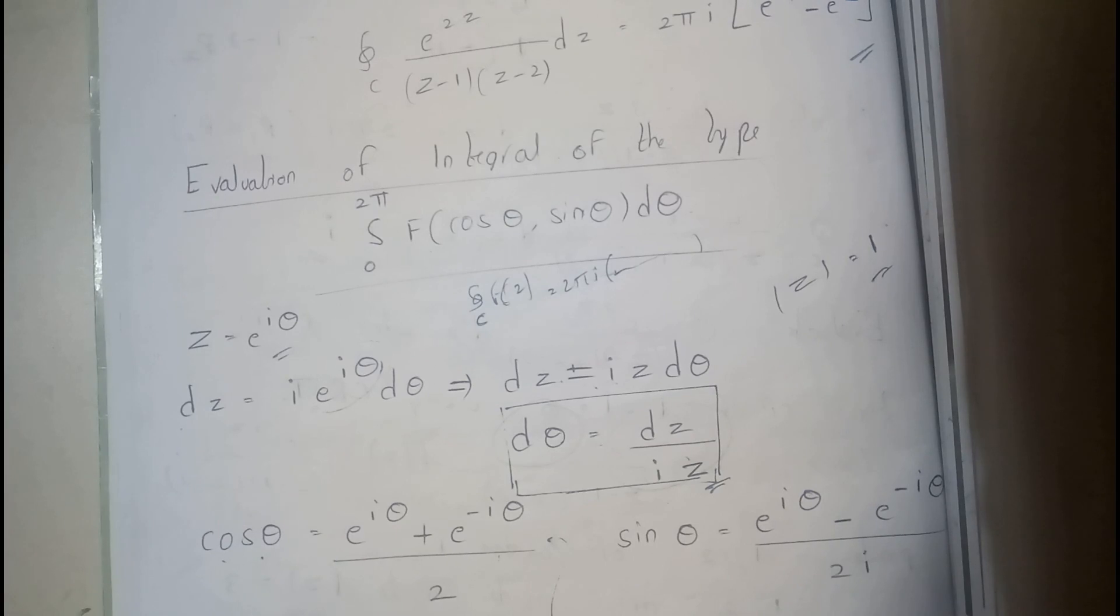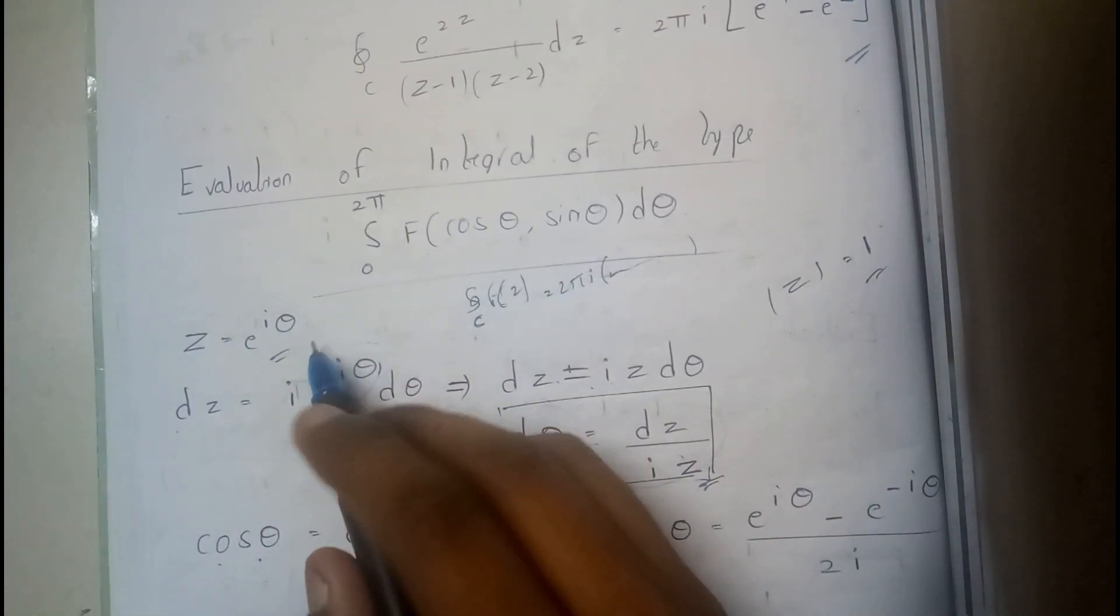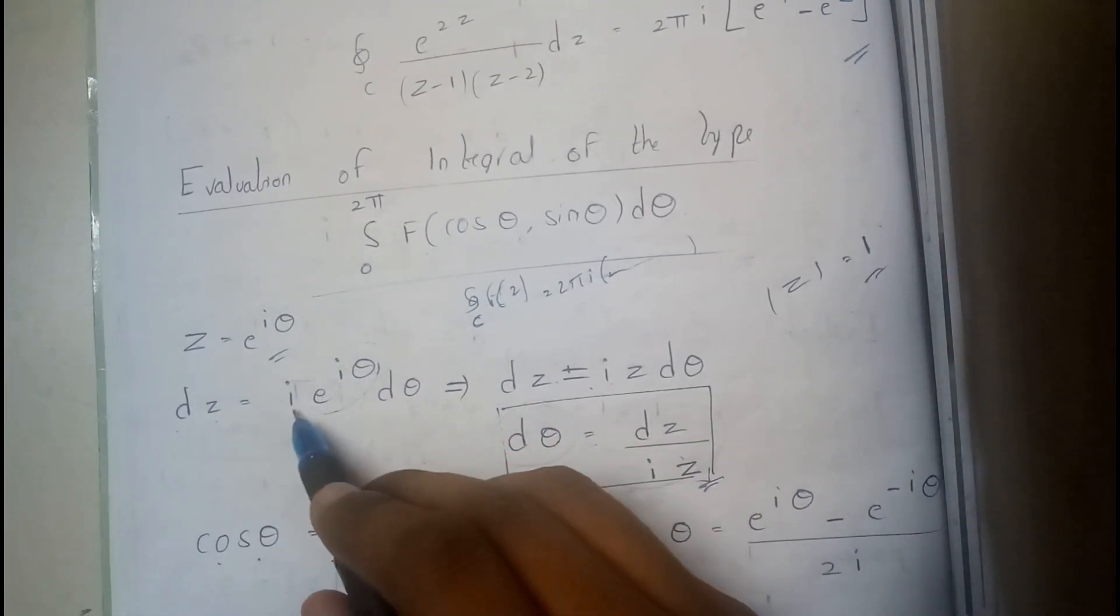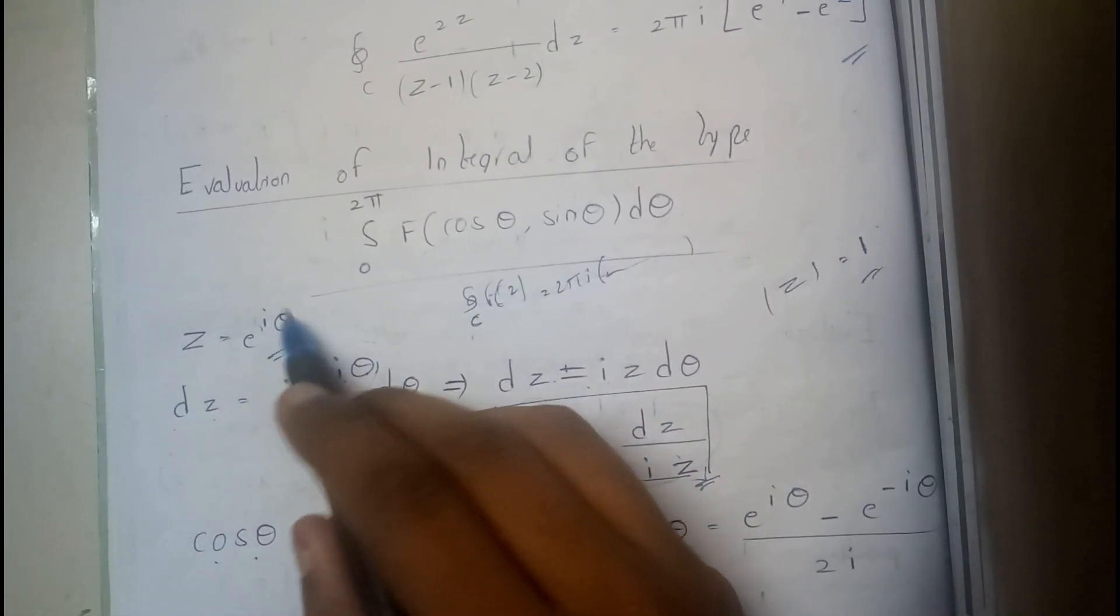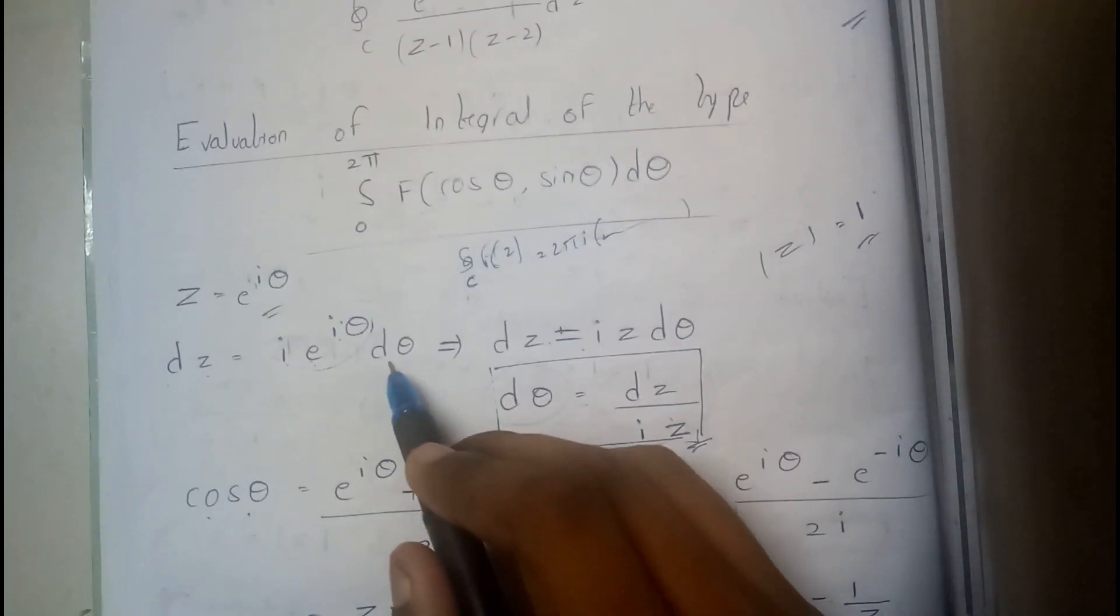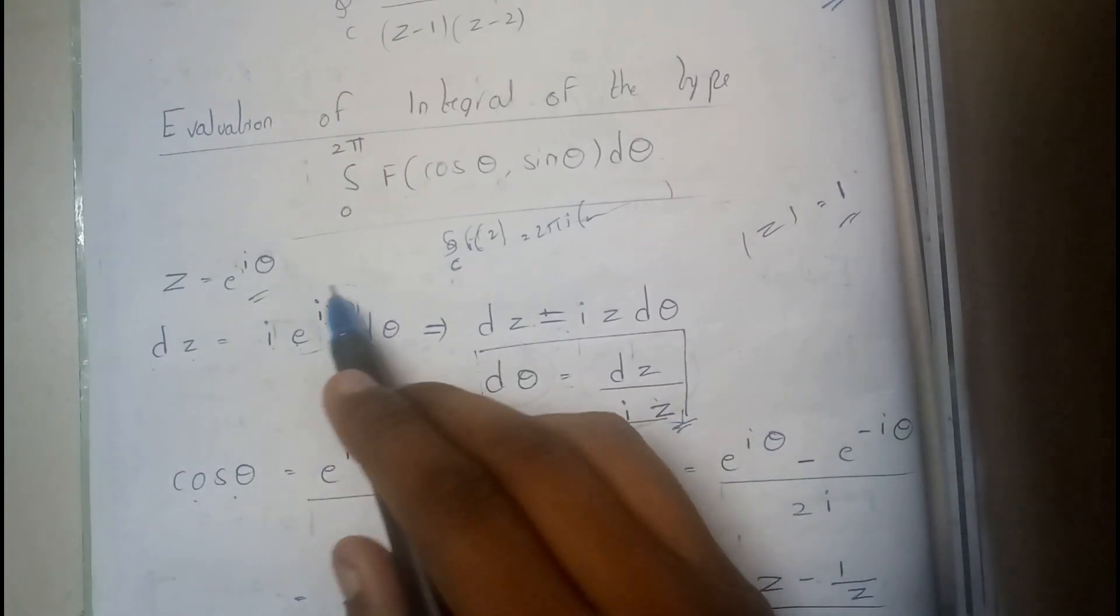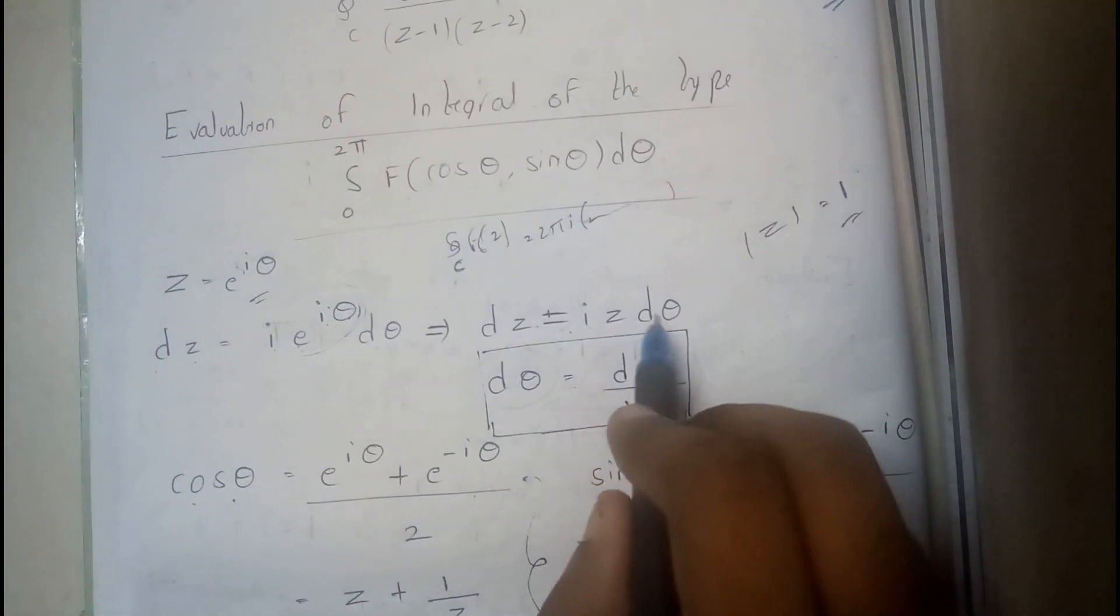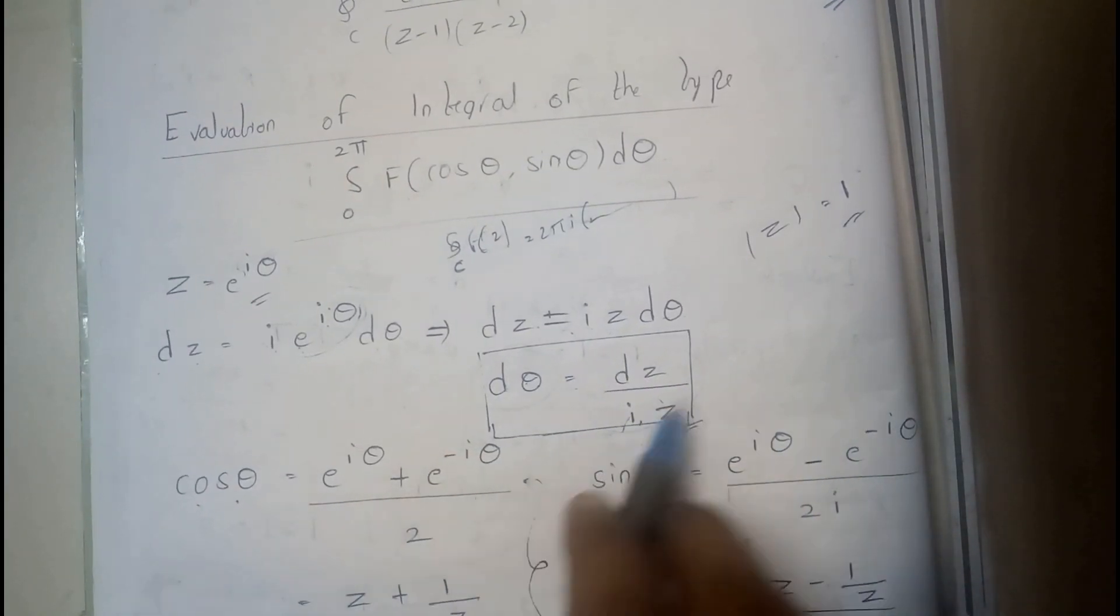So basically initially we need to replace dθ in terms of dz. We are having an equation: z equals e^(iθ). So dz equals i·e^(iθ)·dθ, which implies dz equals iz·dθ. So dθ equals dz/(iz). I hope everyone got a small idea.